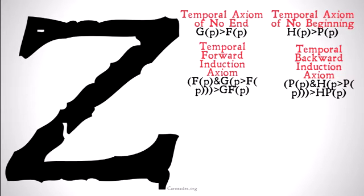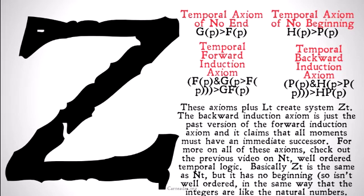If you're curious about these induction axioms, once again check out the previous video where we go into a little bit more explanation. Because this system is just a re-examining of that material, we're not going to go into too much depth here. These axioms plus LT, linear temporal logic, create system ZT. The backward induction axiom is just the past version of the forward induction axiom, and it claims that all moments must have an immediate successor. For more on all of these axioms, check out the previous video on NT, our well-ordered temporal logic.